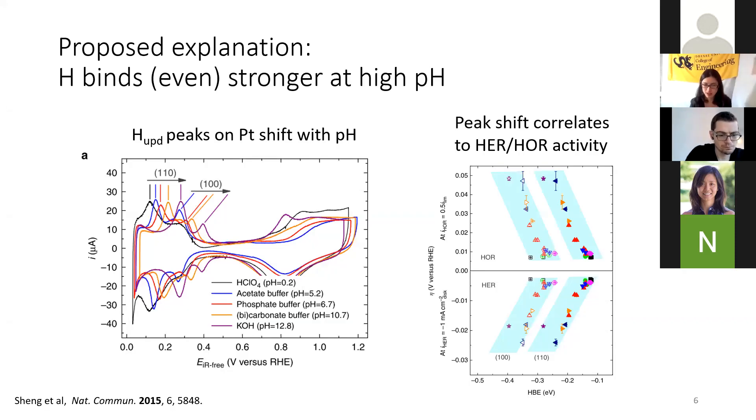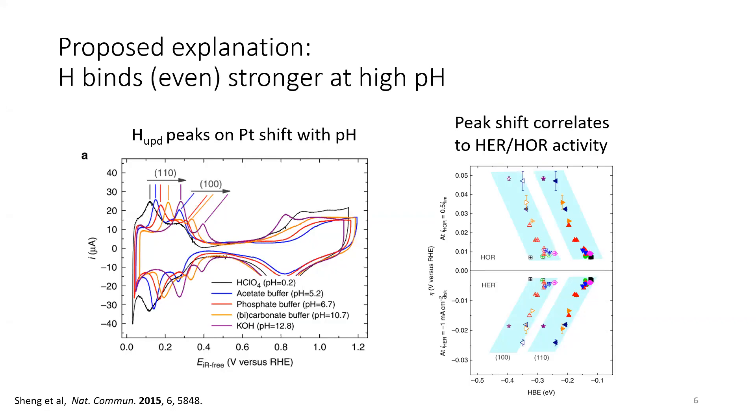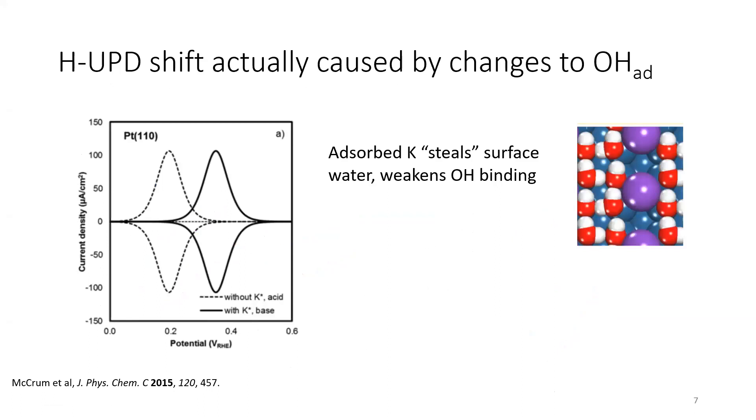If it binds even stronger, the kinetics should get slower. The problem is that this is actually not true. The hydrogen is not binding stronger. What's happening is that OH is binding weaker. There's been very detailed theory from Mike Janek's and Mark Koper's group explaining that this peak shift is actually because of alkaline cations. The absorbed cations will interact with the surface water that weakens the OH binding and pushes the peak to the right.